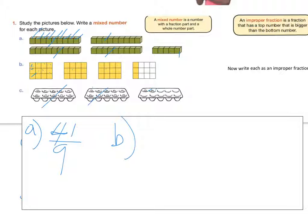B — as we said, it was a three-by-four array, so twelve in each one. Three groups of twelve is 36, add the three left over: 37, 38, 39. That means it is 39 twelfths — that's how you would communicate that improper fraction.